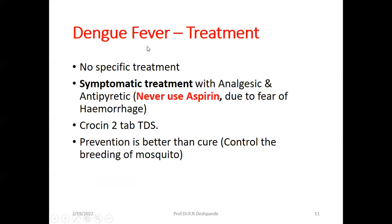As Dengue fever is a viral fever, most of the time there is no specific treatment. Symptomatic treatment is given with analgesics and antipyretics to reduce pain and fever. Never use aspirin or dispirin — because of the risk of hemorrhage. You can use paracetamol. For Ayurvedic treatment, write down: Mahasudarshan Ghanvati, two tablets three times a day, and Guduchi Ghanvati, two tablets three times a day.